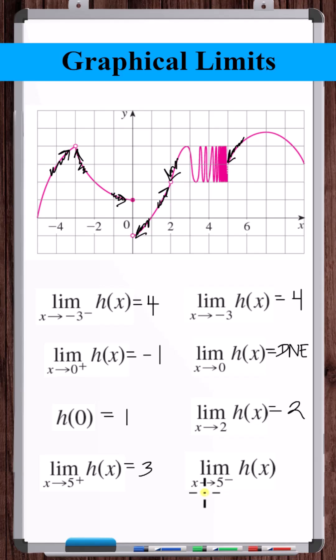The limit as x approaches 5 from the left: coming from the left, the function is oscillating between 2 and 4. This limit does not exist.